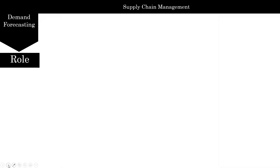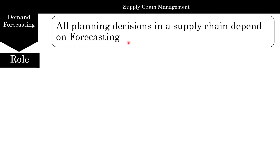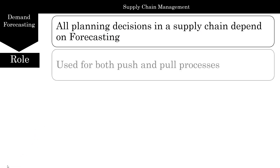Let's look at the role of demand forecasting in a supply chain. All planning decisions in a supply chain depend upon forecasting. Remember, we talked about the three different levels of supply chain: supply chain strategy and design, the tactical aspect which is planning over a year or six months, and the operational part which is more day-to-day operations. The planning decisions all start with forecasting — this is the first thing you're going to do.